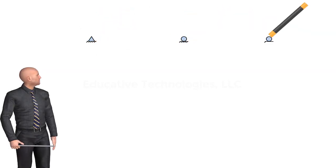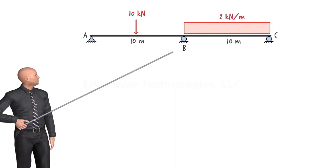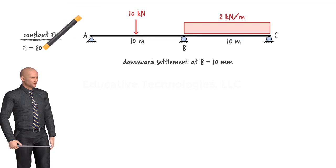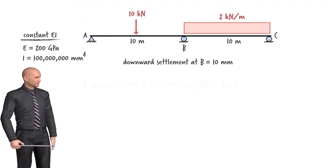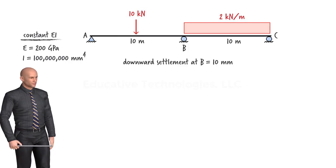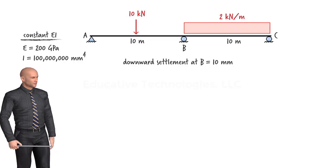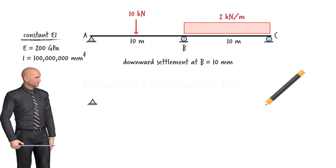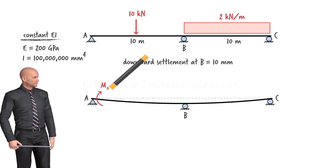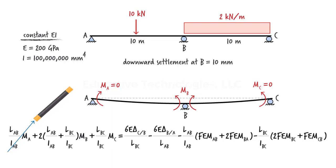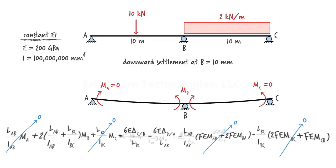Now let's use this equation to analyze continuous beams with support settlements. Consider a two-span beam subjected to a concentrated load and a distributed load. Suppose the support at B has settled by 10 millimeters. The beam has a constant EI. We wish to determine the effect of the support settlement on the beam's reaction forces — specifically, the reaction forces due to the settlement alone, not the applied loads. Since the moment at pin A is zero, the moment at roller C is zero, and we are only considering support settlement, the fixed-end moments are zero as well. The three-moment equation simplifies accordingly.